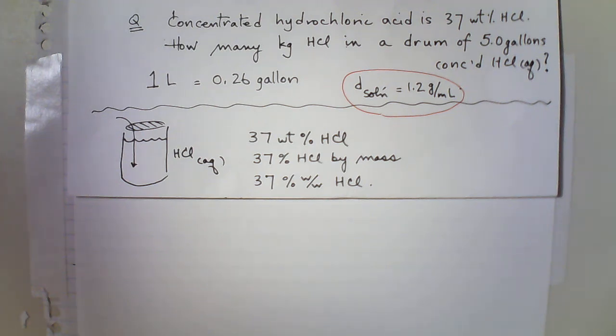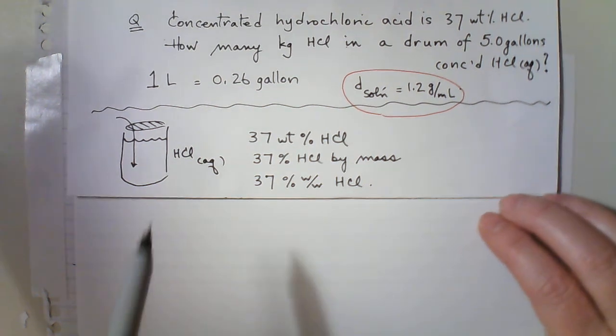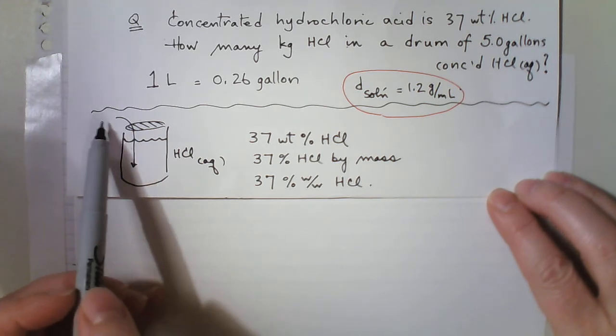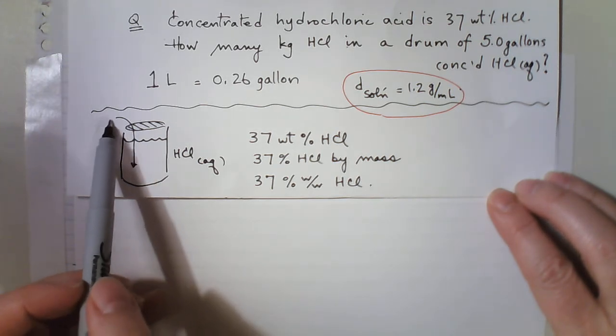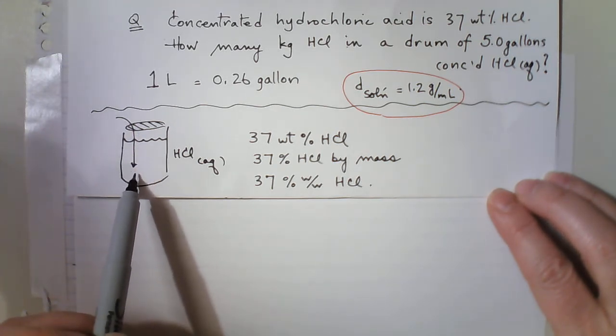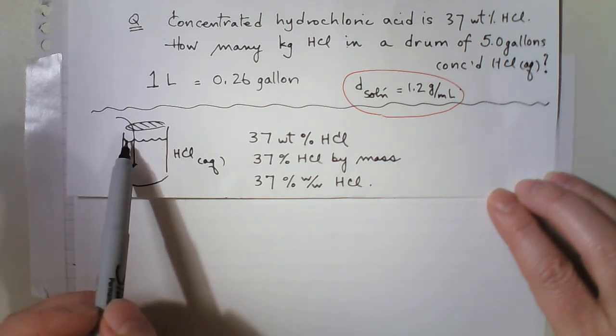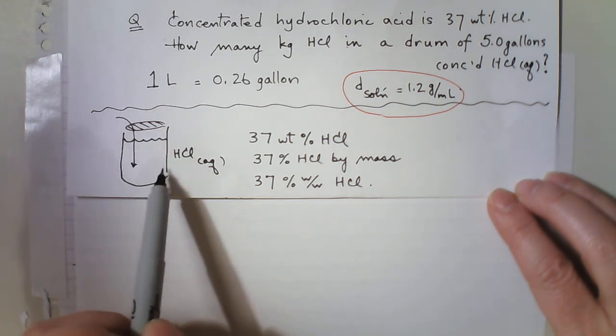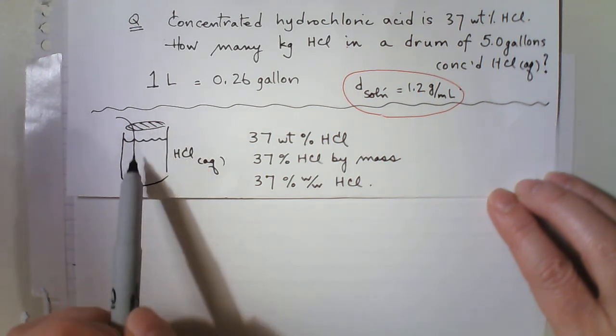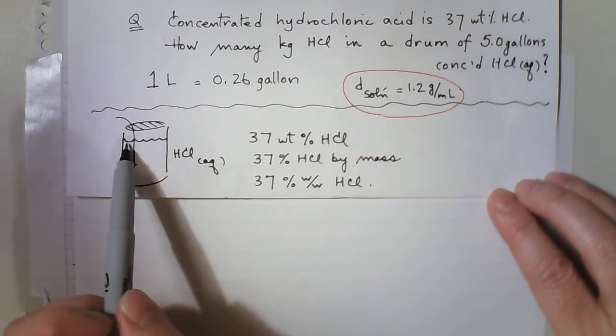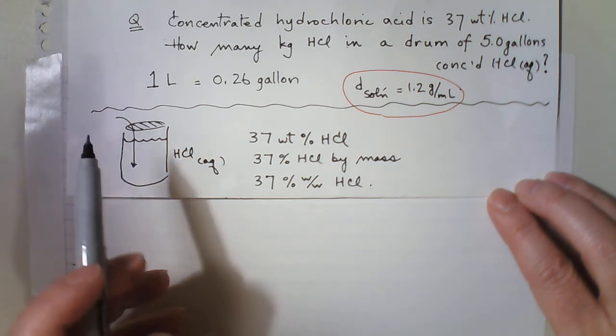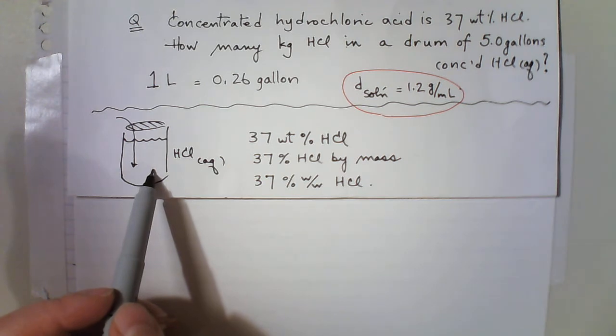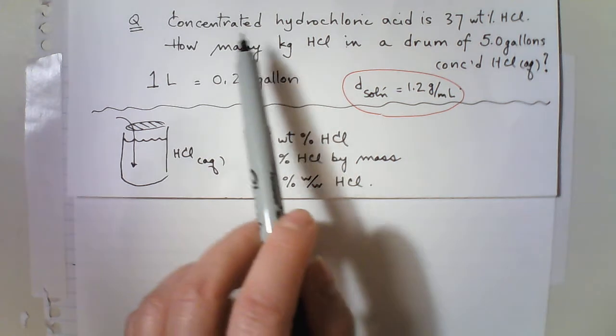Alright, hydrochloric acid. Hydrochloric acid is actually hydrochloride gas bubbled into water, and in this case, to a maximum concentration. So concentrated hydrochloric acid is HCl aqueous. It's HCl gas added to water until I can't dissolve anymore, and that's called concentrated hydrochloric acid.